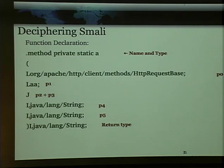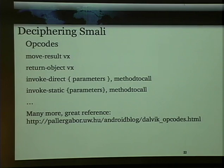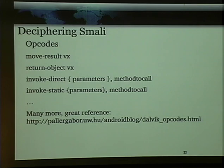Deciphering opcodes — every machine language has opcodes. We're not going to get too deep into this because we could spend forever looking at these. But they're very simple, very atomic, very low-level functions. Move-result moves the result of the last function into whatever register is passed into it with VX. Return-object puts the return object there. Invoke-direct, passing the parameters, tells you what method to call. Very similar — you can read all about it at that link.